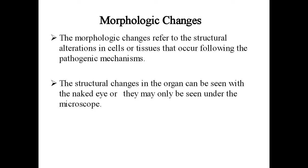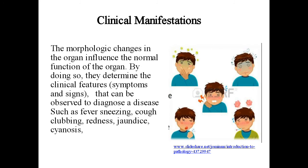Morphological changes refer to the structural alterations in cells or tissues that occur following pathogenic mechanisms. The structural changes in an organ can be seen with the naked eye or may only be visible under the microscope.